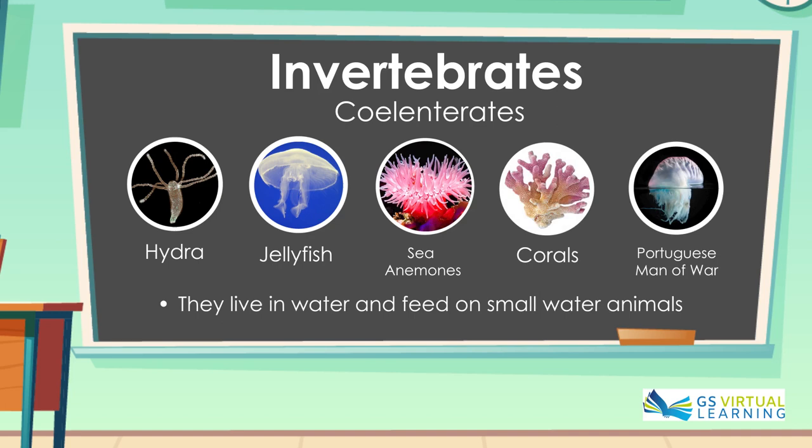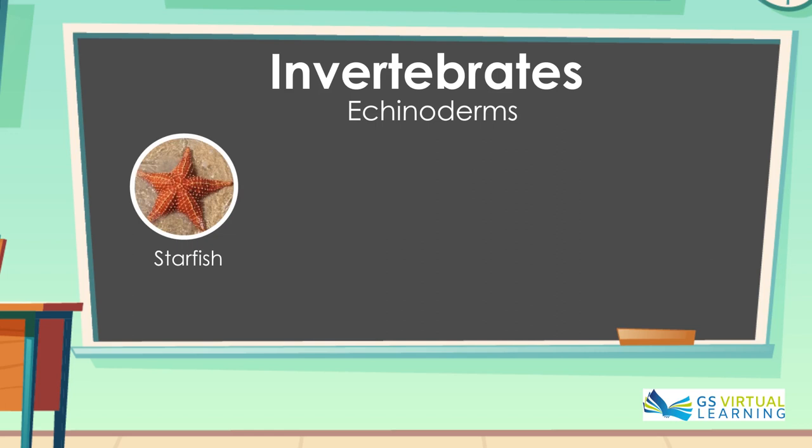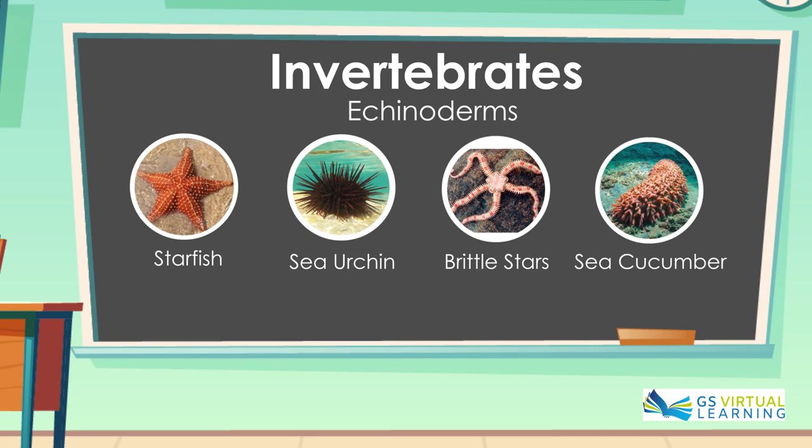The second group of invertebrates are the Echinodams. They include starfish, sea urchin, brittle stars and sea cucumbers. These are animals which live in seas.